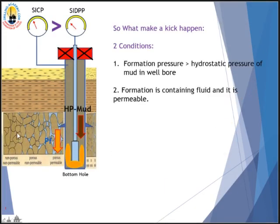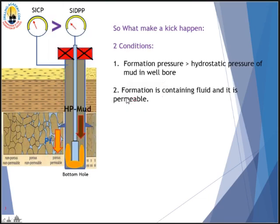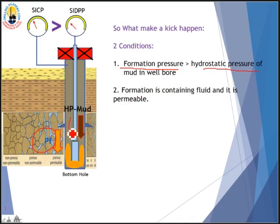Now, what makes a kick happen? There are two conditions. Number one: formation pressure (Pf) must be greater than the hydrostatic pressure of the mud in the wellbore (HP mud). Condition number two: the formation must contain fluid and must be permeable. If the formation is not permeable, a kick cannot happen.